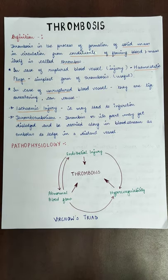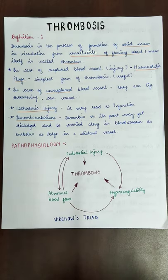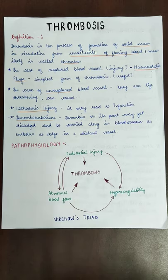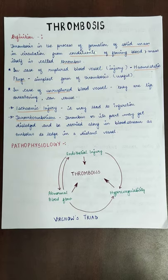Thrombosis means that in blood circulation, the constituents and components of blood form a solid mass, which we call a thrombus. Thrombosis is the process of formation of a solid mass in circulation from constituents of flowing blood. The mass itself is known as a thrombus.